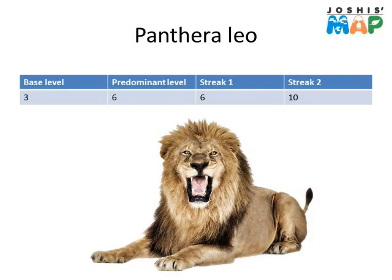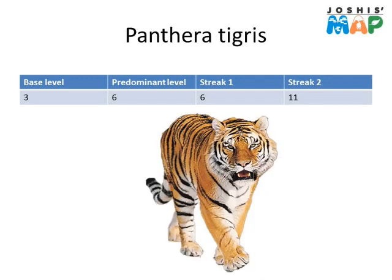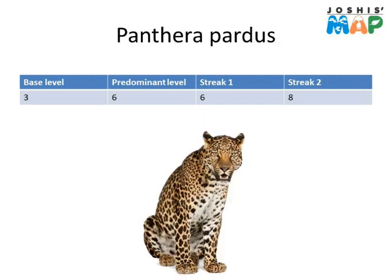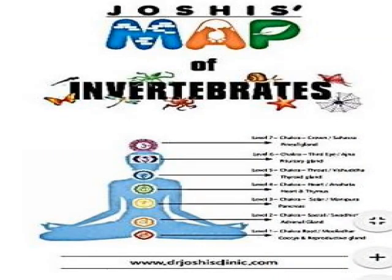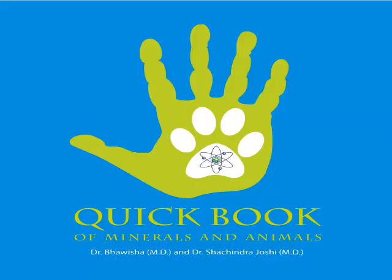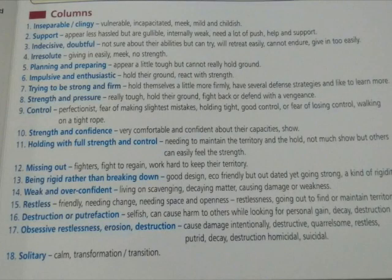Within the small genus or family, you want to differentiate the available species or remedies that come close — that's where the column helps. For example, Panthera leo has been given column 10, like Platina of the gold row in the periodic table, whereas Panthera tigris has been given column 11, and Panthera pardus column 8. So once you know you want to prescribe a big wild cat, you ask: is this patient really like column 8? These columns are similar to those of the periodic table but with a slight shade of difference, as explained in the invertebrate chart and the quick book.